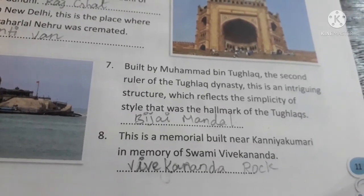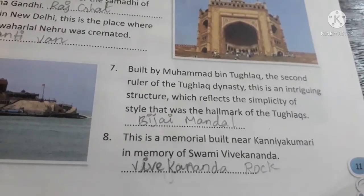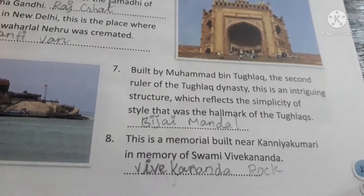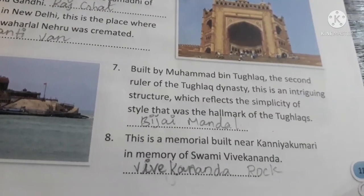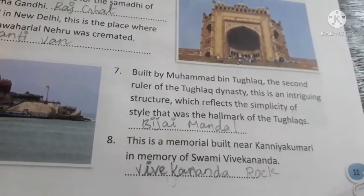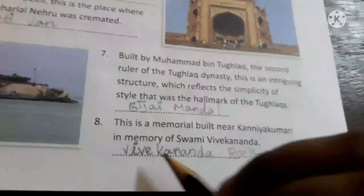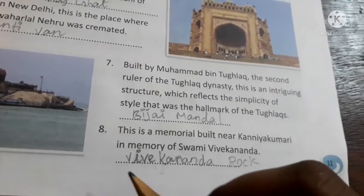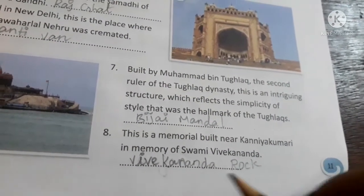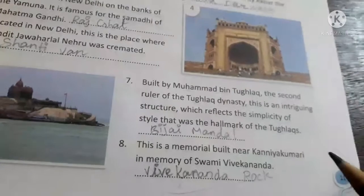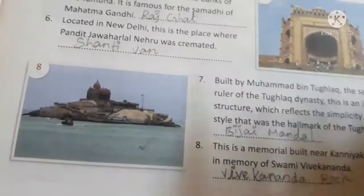Built by Mohammad bin Tughlaq, the second ruler of the Tughlaq dynasty, this intriguing structure reflects the simplicity of style that was a hallmark of the Tughlaqs — it is Bijai Mandal. This memorial was built near Kanyakumari in memory of Swami Vivekananda — it is the Vivekananda Rock.